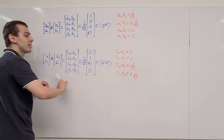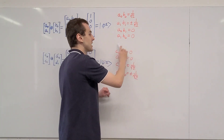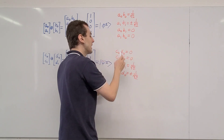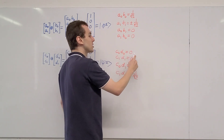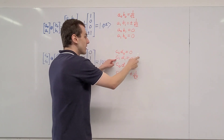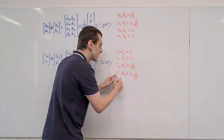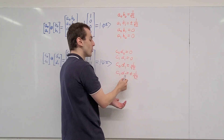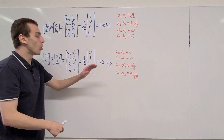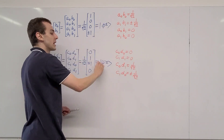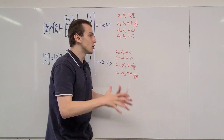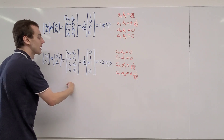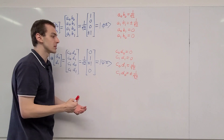We can make a similar observation for the Ψ± Bell states. From c0d0 = 0 and c1d1 = 0, at least one variable in each product must be zero. But from c0d1 = 1/√2 and c1d0 = ±1/√2, none of these variables can be zero. Again we have a contradiction. So for all four Bell states, it is not possible to write them as the tensor product of a single-qubit state with another single-qubit state — all four Bell states are entangled.